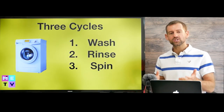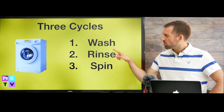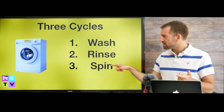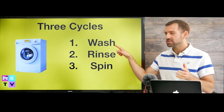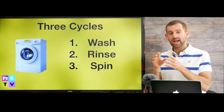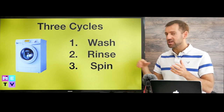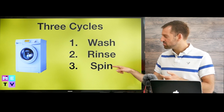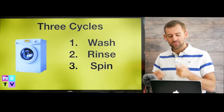A washing machine has three cycles: wash, rinse, and spin. Wash means it washes your clothes with water and detergent. Rinse means it just rinses with water. And spin means it dries your clothes out.